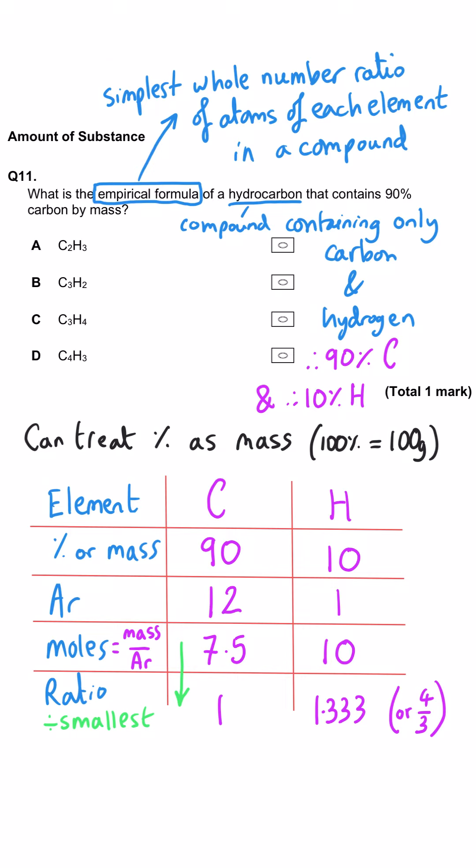We need to turn this into an integer ratio. Well 0.333 is a third, so that's one and a third. We need to multiply by three to get rid of the fraction and get whole numbers. We get a ratio of three for carbon, four for hydrogen. So the ratio is C3H4 which means C is the correct answer.